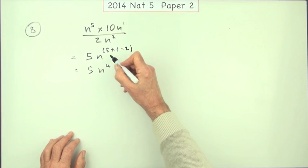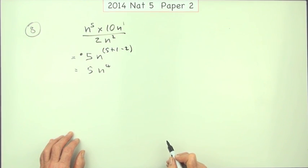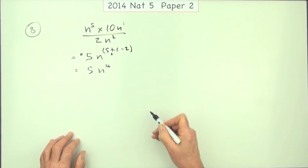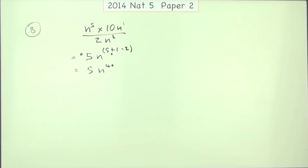So the three marks were: one for dealing with the coefficients, one just for doing the numerator part, and then one for doing the subtraction to get the four.